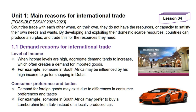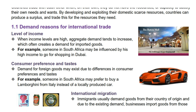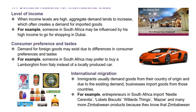We will start with level of income. When people start making a lot of money, they start buying Gucci, Rolls Royce and more luxurious goods. When income levels are high, aggregate demand tends to increase, which often creates a demand for imported goods. For example, someone in South Africa may be influenced by their high income to go shopping in Dubai.